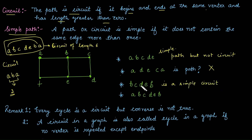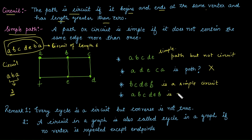For the path a-b-c-d-e-b: the endpoints are different so it is not a circuit. Since we are considering distinct edges in this case, it is a simple path.